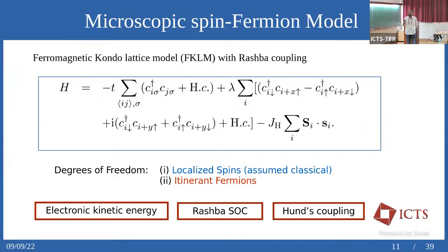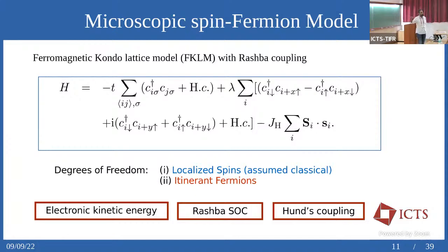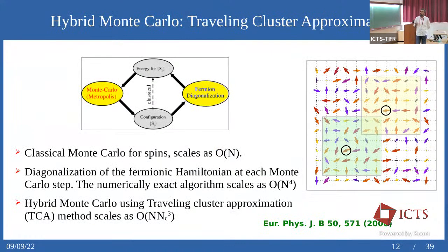How do we handle such Hamiltonians with mixed classical and quantum degrees of freedom? A pure quantum Hamiltonian can be exactly diagonalized; a pure classical one can be treated with classical Monte Carlo. If we promote the large S to a quantum variable, the Hilbert space grows exponentially. The classical approximation is useful because one can use a hybrid Monte Carlo technique.